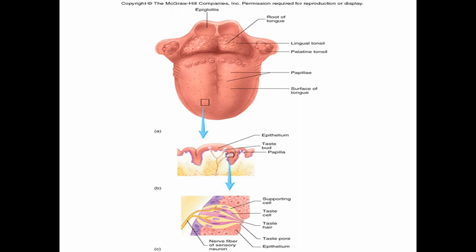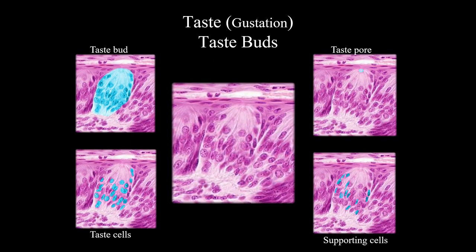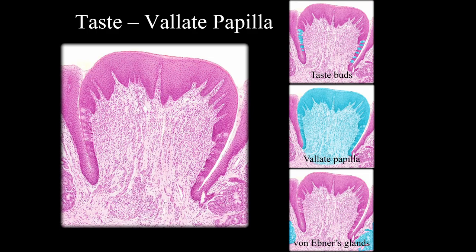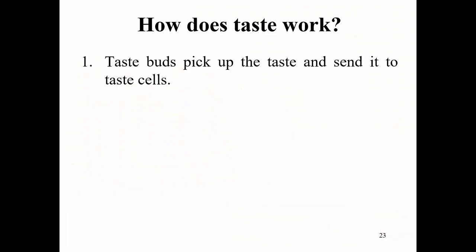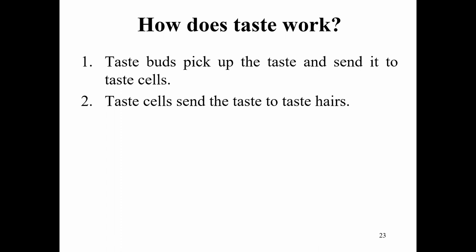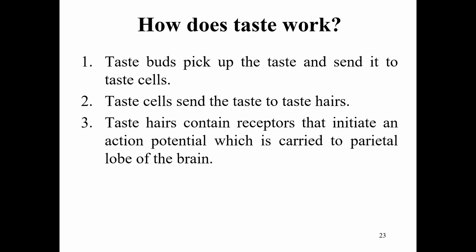Taste buds are found on the surface of the tongue. Each oval-like taste bud contains taste cells and supporting cells. Taste buds pick up taste and send it to taste cells; taste cells send it to taste hairs, which contain receptors that initiate an action potential carried to the parietal lobe of the brain, where the taste is processed.